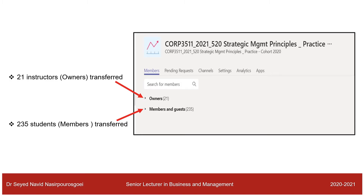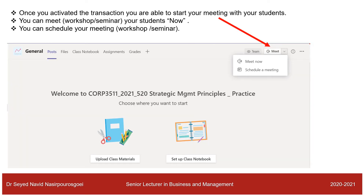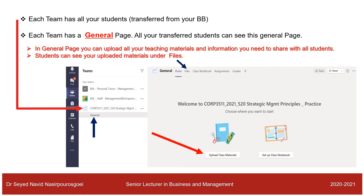In this example you can see from my module that 21 instructors — referred to as owners on MS Teams — and 235 students, called members, have been transferred. Once you have activated the module, you are able to start your meeting with students right away using Meet Now, or you can schedule your meetings or workshops.